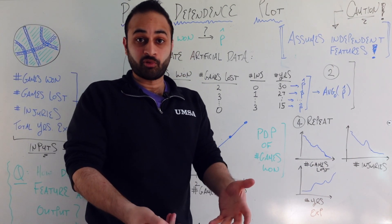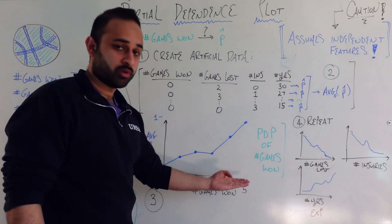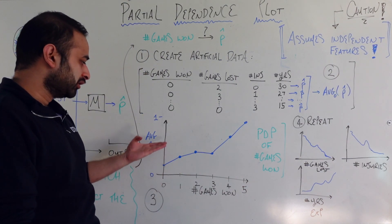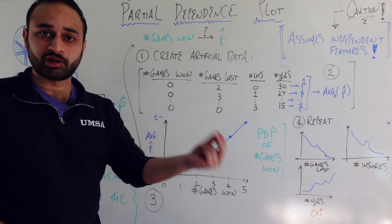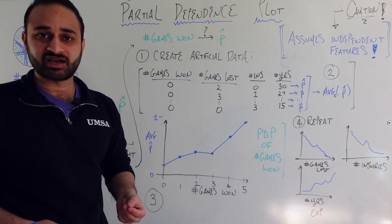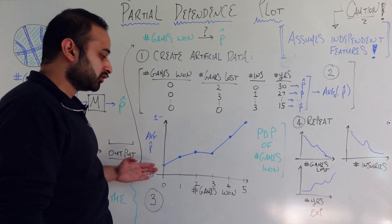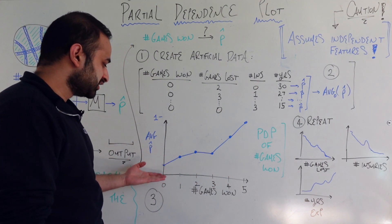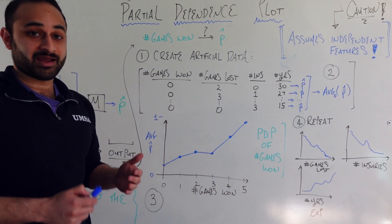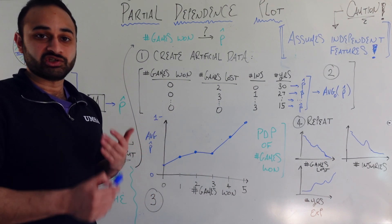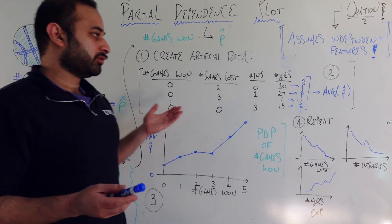We'd get something that shows exactly what the board was asking for. If we come back and show them this plot — here's how the number of games won affects the predicted probability of winning your next game — that makes a whole lot of sense. It helps interpret the model much better for people who aren't data savvy. It shows that the more games you've won, the higher the predicted probability of winning your next game — pretty intuitive.